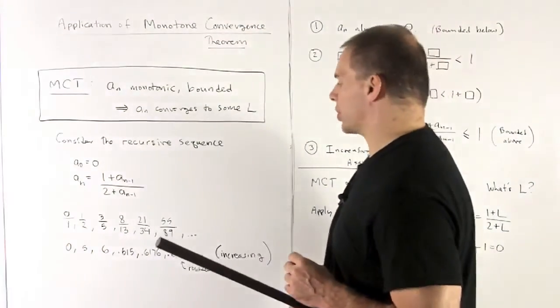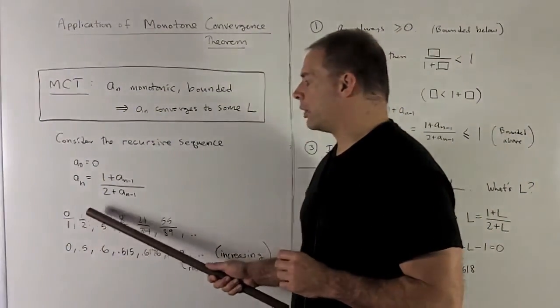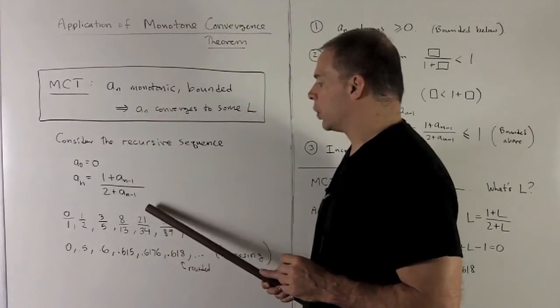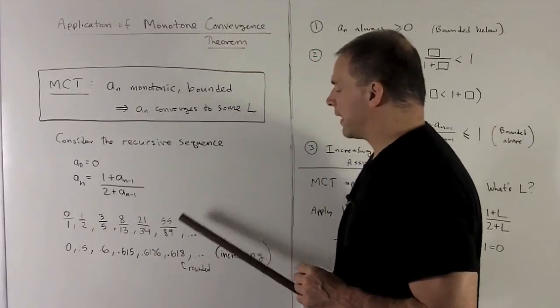We write out the first six terms: 0/1, 1/2, 3/5, 8/13, 21/34, 55/89.